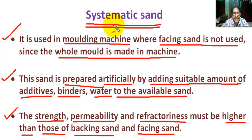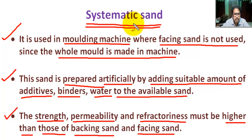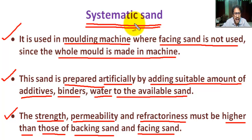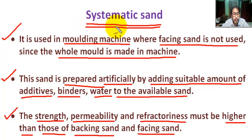In mechanical foundries where machine molding is employed, a so-called synthetic sand is used to fill the whole flask — meaning the cope and drag molding box. The used sand is cleaned and reactivated by the addition of water, binders, and special additives. Here, no facing sand is used.